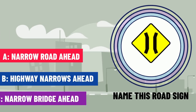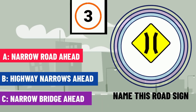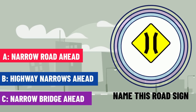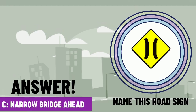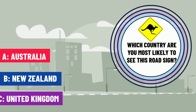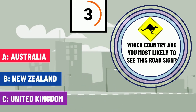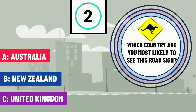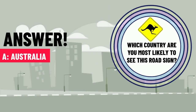Question 13. Name this road sign. The correct answer is C — narrow bridge ahead. Question 14 — which country are you most likely to see this road sign? The correct answer is A — Australia.